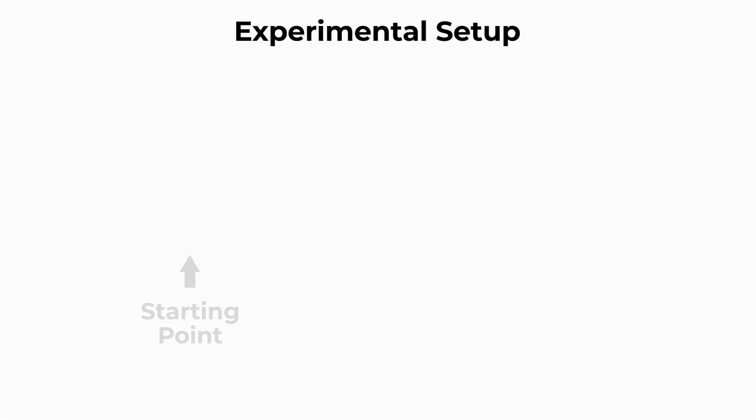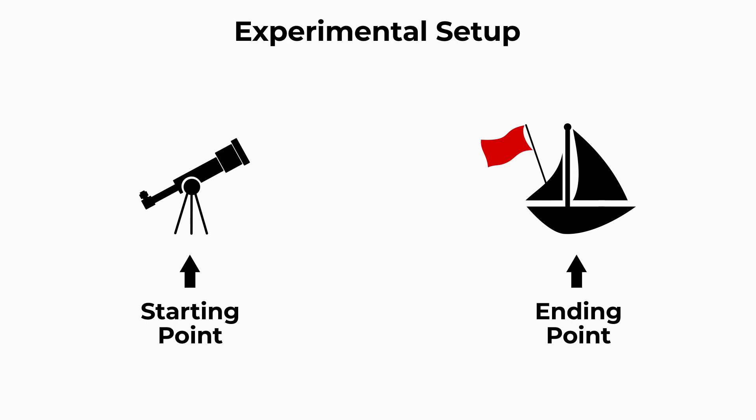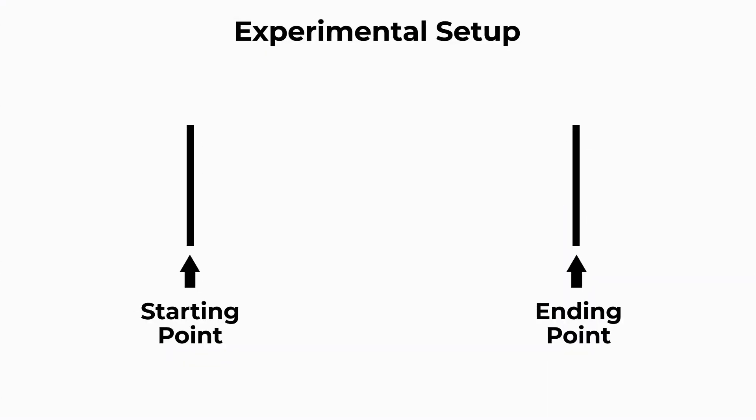In the normal setup they use, they have a starting point and an ending point. In the Bedford experiment, the starting point was the telescope, and the ending point was the flag on the boat. But let's swap these both out for two poles. Now let's say you shoot a laser from one pole to the other. If you line it up just right, you can get the laser to hit the same spot on both poles, say 5 feet.